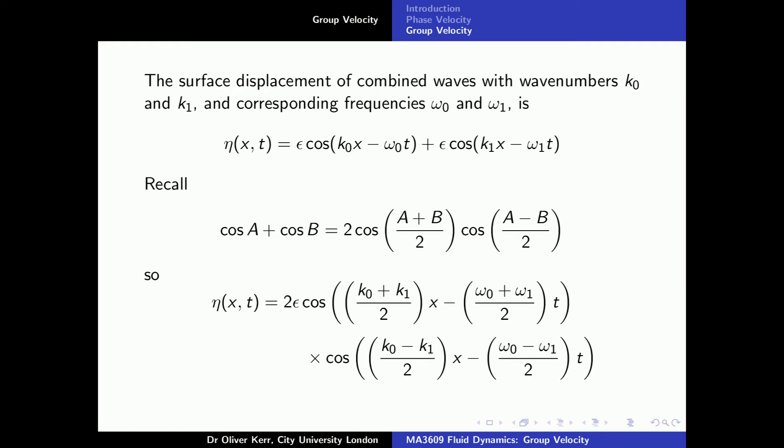Returning to the mathematics, we add the elevation of two waves of the same amplitude, but with slightly different wave numbers, k₀ and k₁. These will have corresponding frequencies omega 0 and omega 1. This is given in the top expression for the surface elevation, eta. Using a standard trigonometric relation, we re-express this as the product of two cosines, as shown at the bottom.